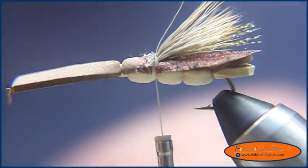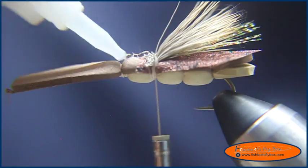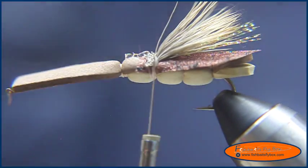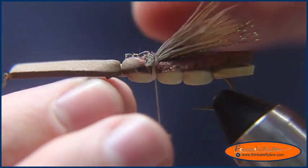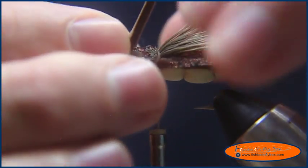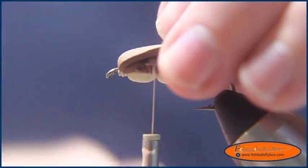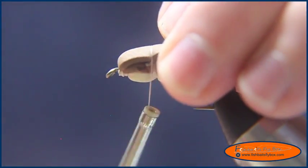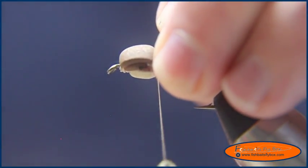We're going to put a dab of glue onto the first section of that fly. After we put the dab of glue on that section of fly, we're going to fold the foam over. Over the top. And do a couple of loose wraps. And we're going to tighten it.